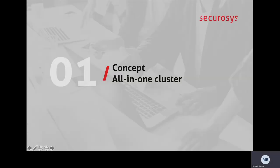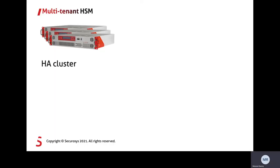The first concept is that you have an all-in-one cluster. A cluster consists of multiple HSMs that are synchronized together in one bundle. They can be all over the world, geo-redundantly, and for the application they all look the same. So the application can pick the nearest one to have the least network delay.